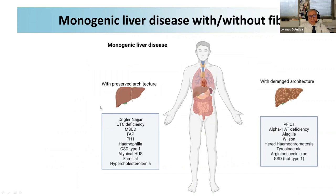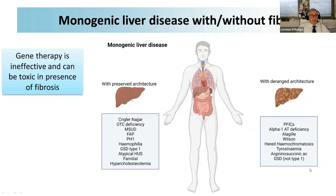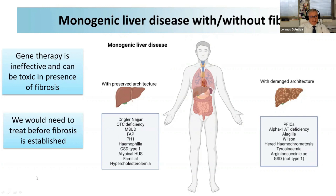Importantly, there is a difference between treating a disease with a normal liver architecture versus a deranged architecture. In diseases like Crigler-Najjar and hemophilia, the liver has nearly normal architecture. But in PFIC, alpha-1 antitrypsin deficiency, and Wilson disease, we have fibrosis and development of cirrhosis. Gene therapy is ineffective and can be toxic in the presence of fibrosis. These patients respond less and may have increased toxicity. We should therefore try to treat early, before fibrosis is established.